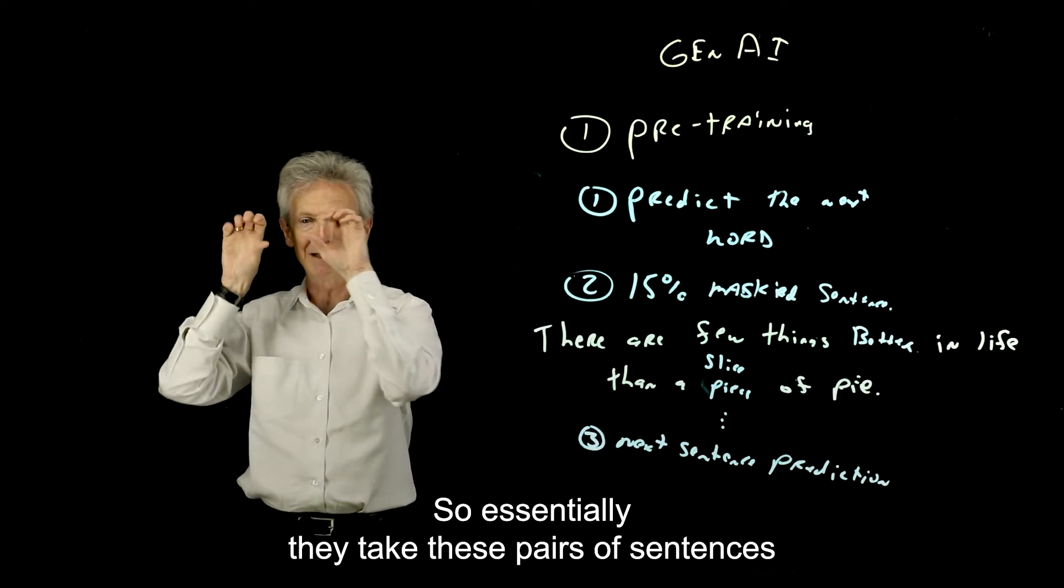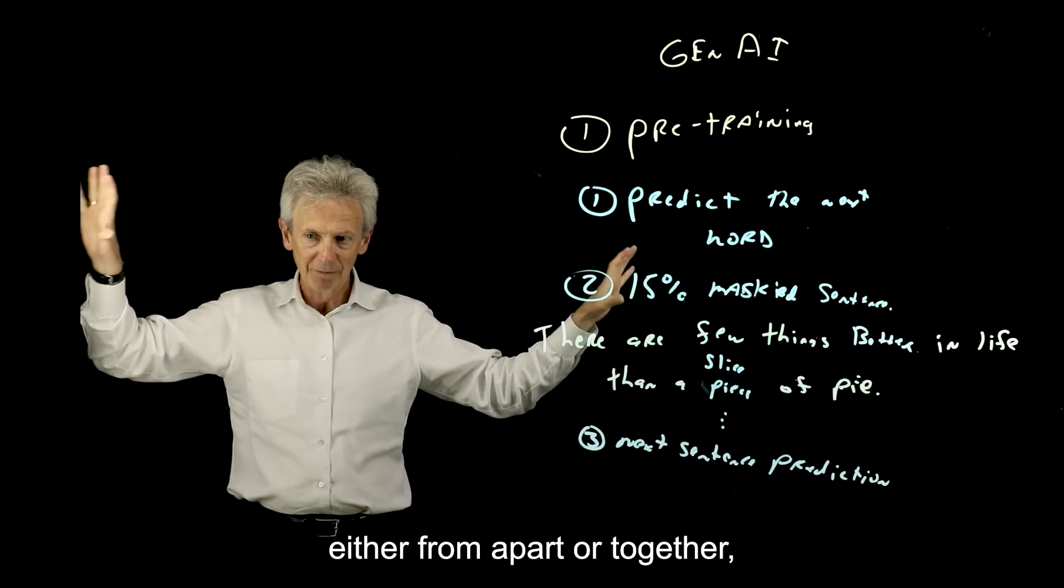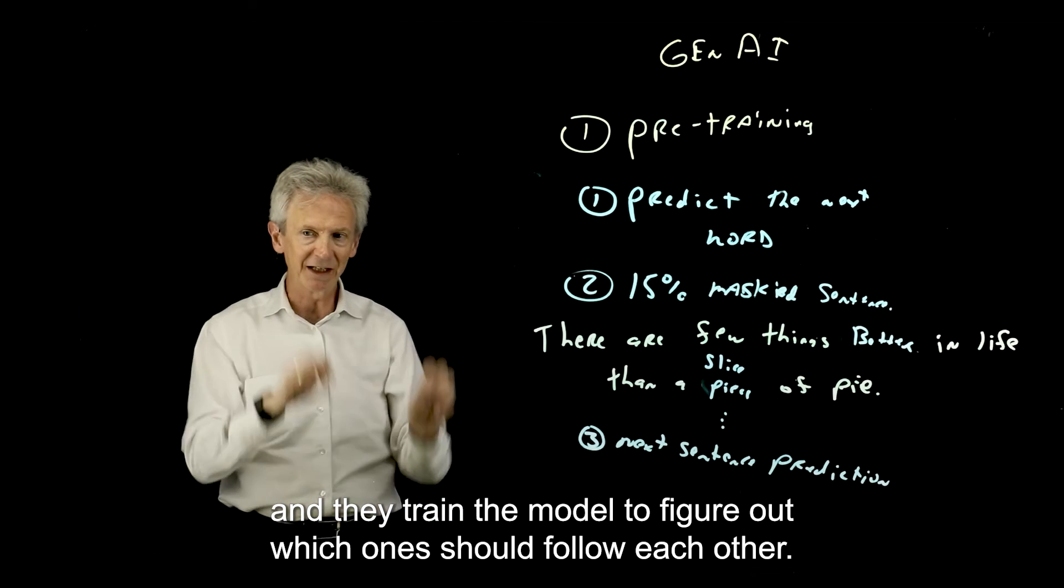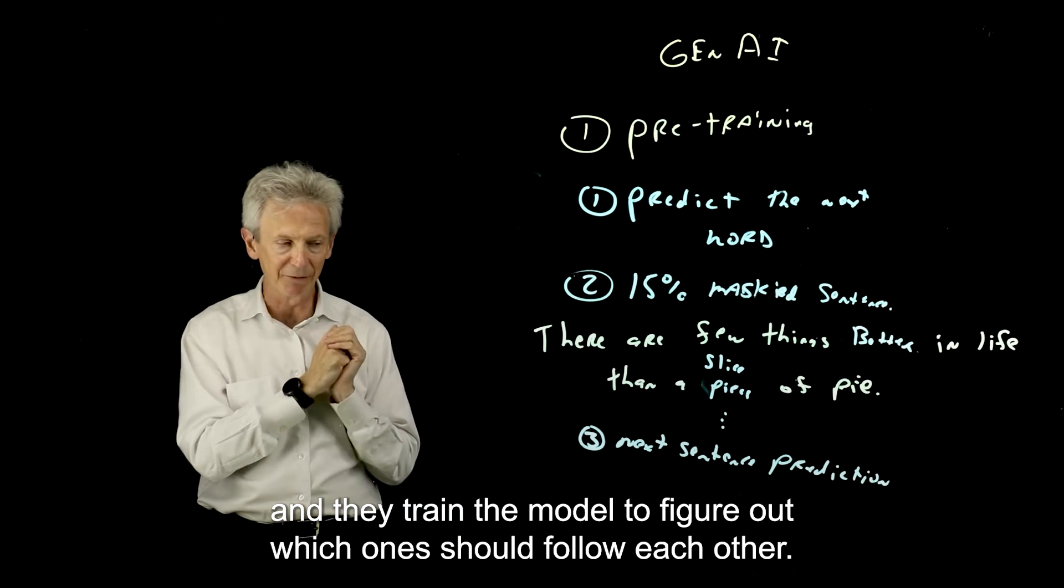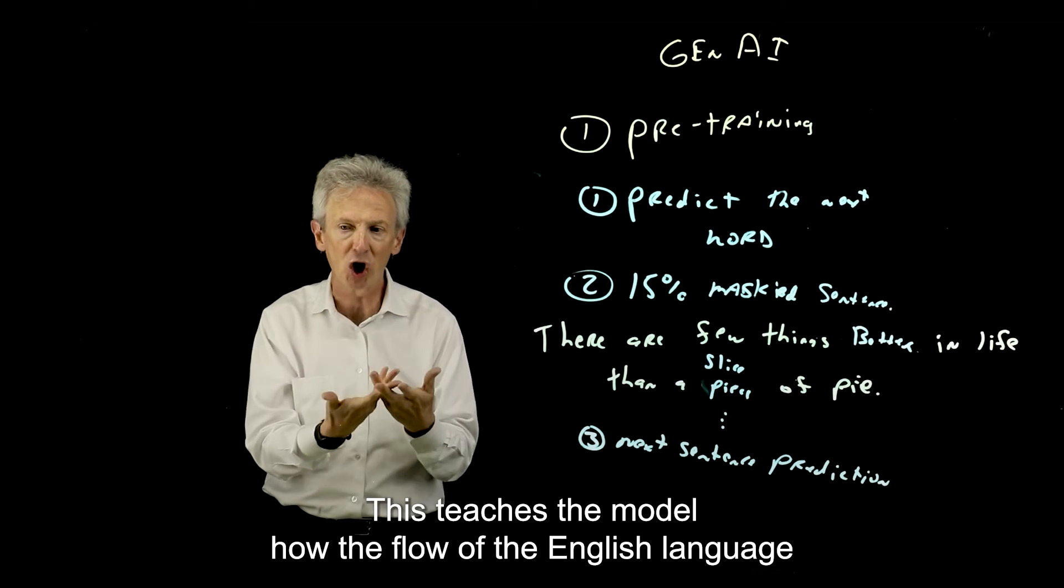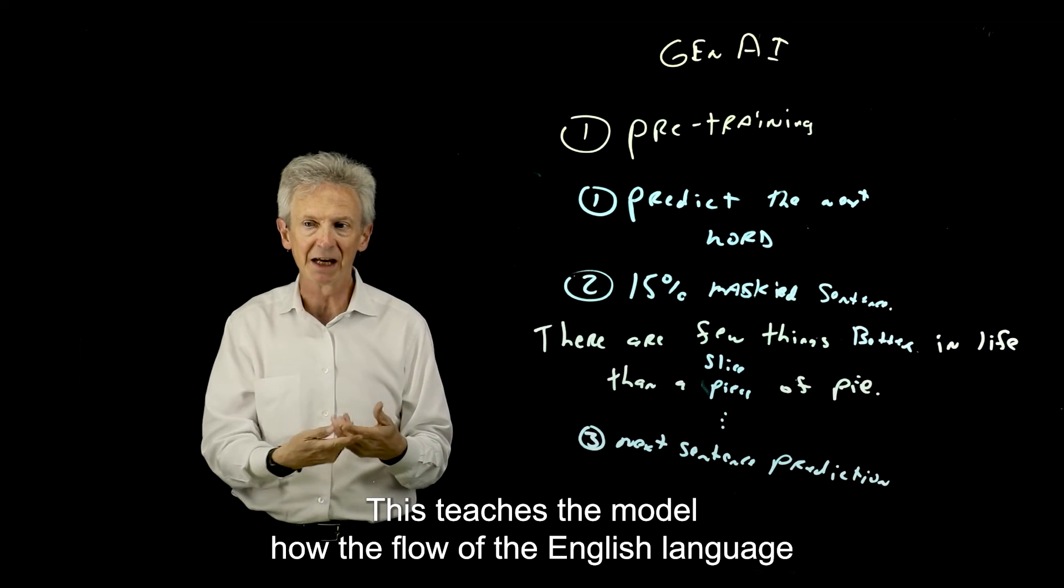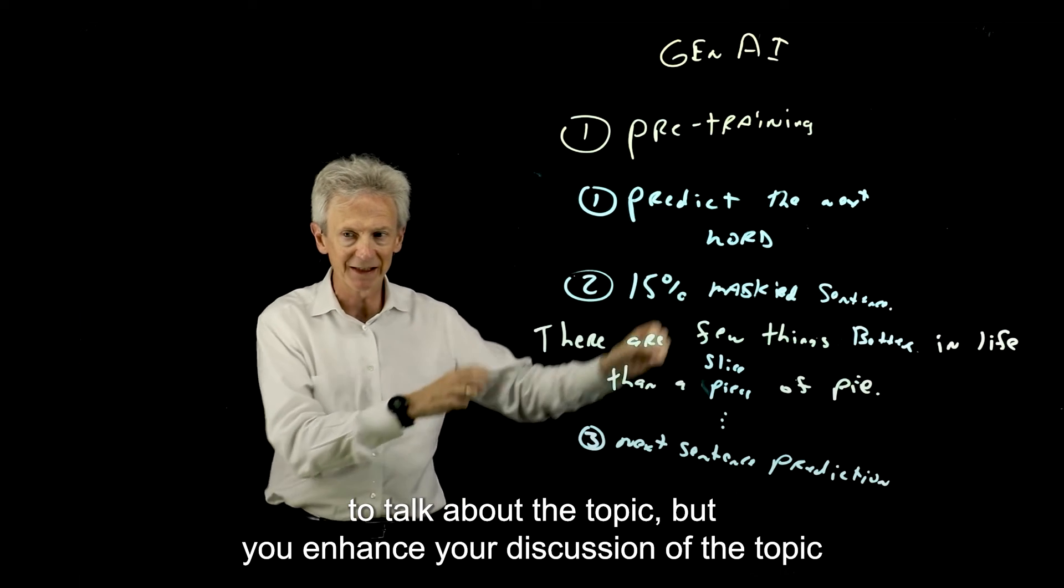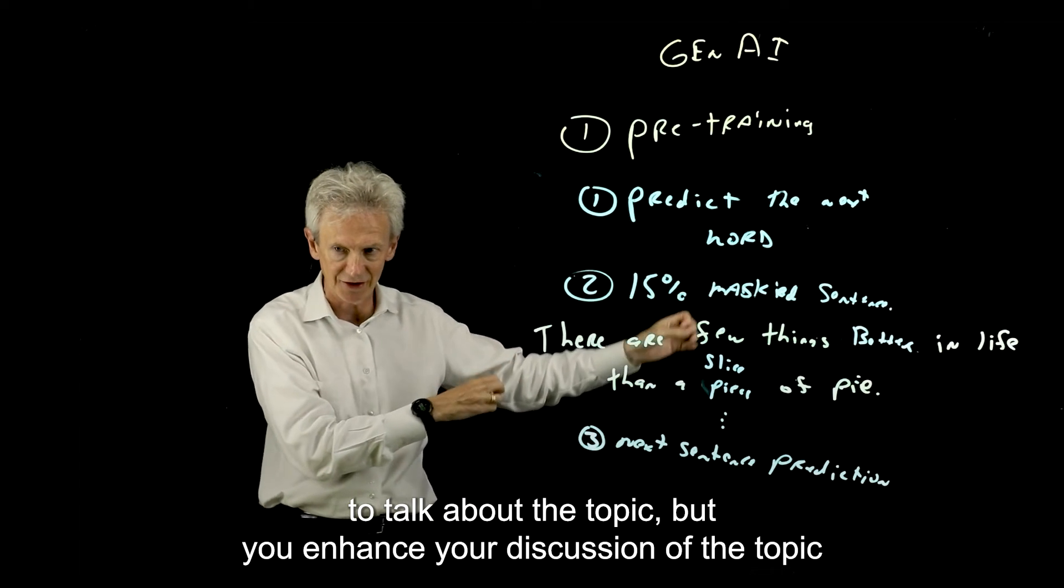Essentially they take these pairs of sentences, either from apart or together, and they train the model to figure out which ones should follow each other. So what does this do? This teaches the model how the flow of the English language works. It's how you take a topic and then you continue to talk about the topic, but you enhance your discussion of the topic.